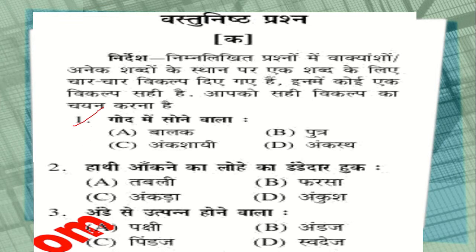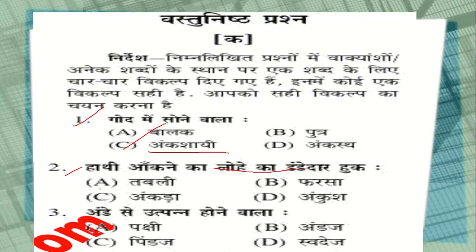So our first question is shown on screen with four options. The correct answer is option number 3. Question number 2 is also shown — options are: tabli, farsha, aqda, and option D. The right answer is option D. Question number 3: the correct answer is also shown on screen.